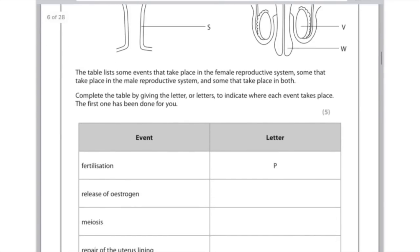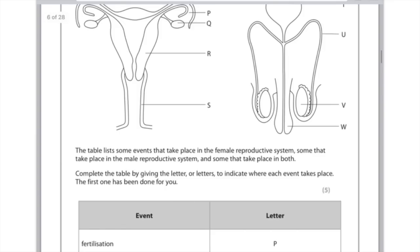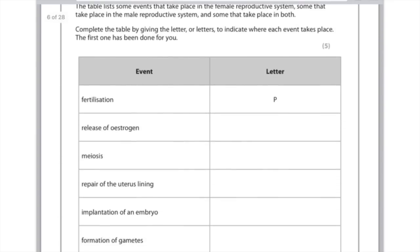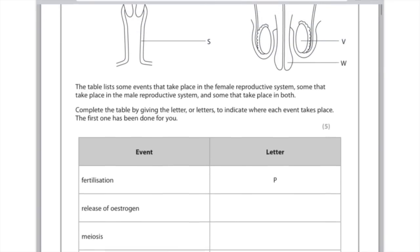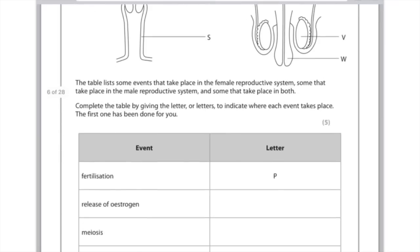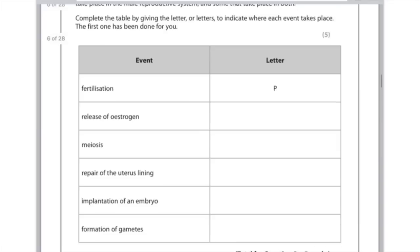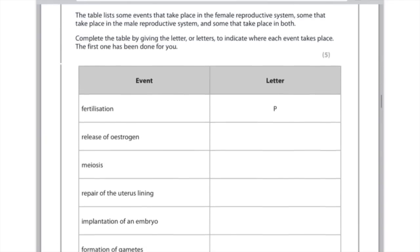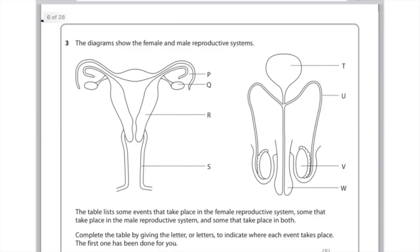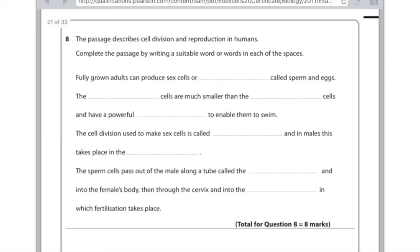Meiosis, okay meiosis is the type of cell division which creates sex cells so both sperm and eggs so you're looking for the ovary in the female and the testicles in the male, so that's letters Q and V respectively. Next up, repair of the uterus lining, right okay that has to happen in the uterus, so R is the uterus. Implantation of an embryo, that also occurs in the uterus so it needs to be R again. Formation of gametes, well gametes are sex cells so we're looking for the ovary and the testicles again, so that's Q and V again.